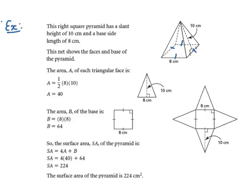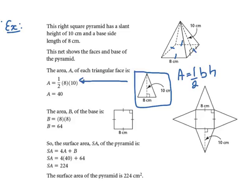Looking at one triangle, we use the formula: area equals one-half base times height. The base is 8 and the height is 10, so the area is 40 centimeters squared. Since it is a right square pyramid, the base is a square. Area of the square equals side squared: 8 squared equals 64 centimeters squared.